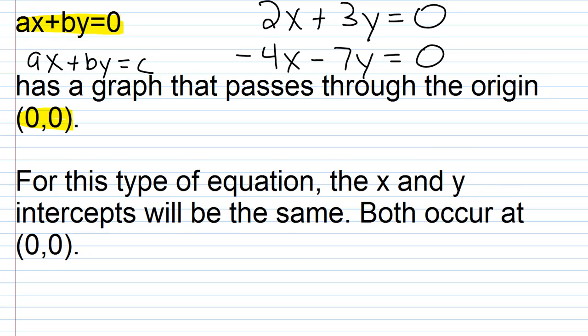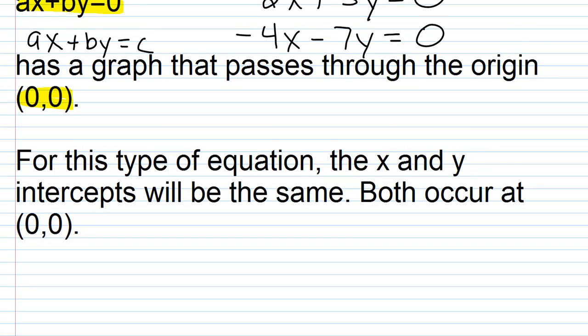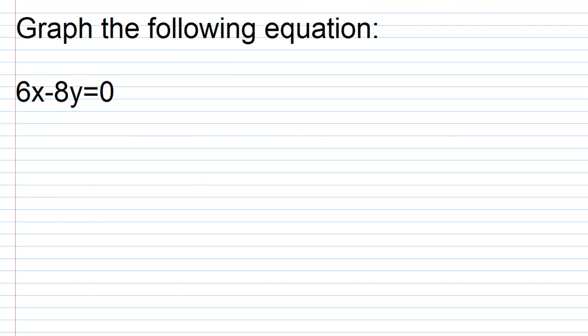You're not going to be able to use the intercept method because you're only going to get one point out of that. You're going to have to choose two other points, or at least one other point. We'll look at one quick example here. This isn't really that difficult of a situation, it's just something you need to know that will occur so you don't sit there using the intercept method saying, 'What happened?'